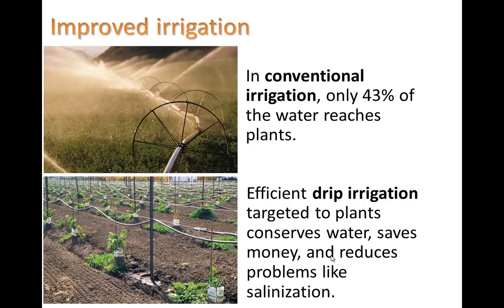With drip irrigation, you have these drip lines — black tubes or pipes with little holes in them that water just drips out of. That dripping goes right on the soil. If you look at the soil here, it's a little bit darker, and that can help keep the soil really moist and keep the roots in it happy.